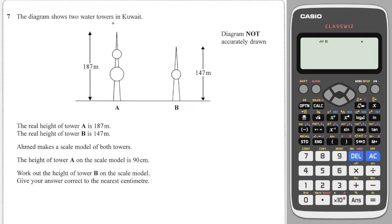We've got two water towers in Kuwait. The real height of tower A is 187 and tower B 147. Ahmed makes a scale model of both towers. The height of tower A in the scale is 90. Work out the height of tower B.